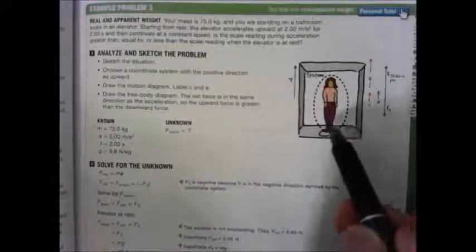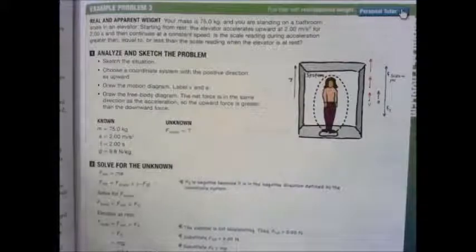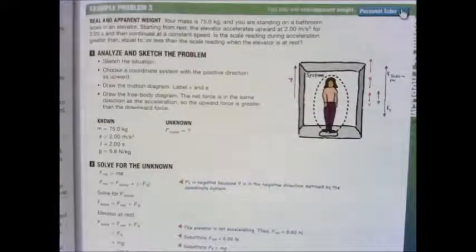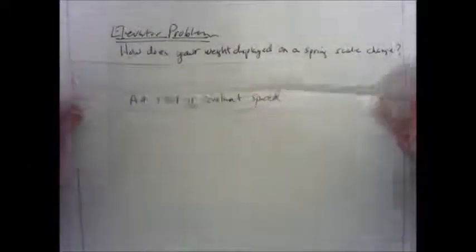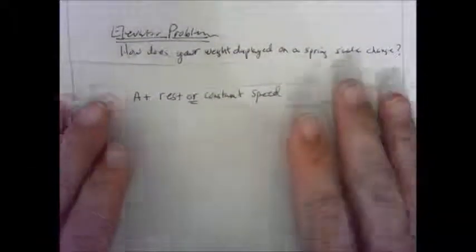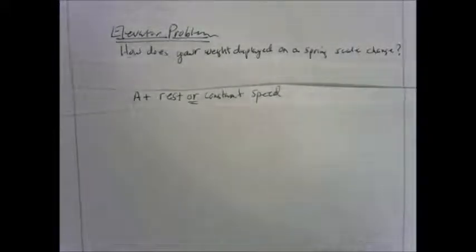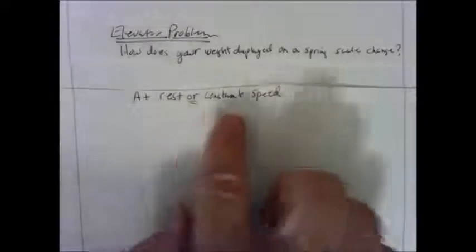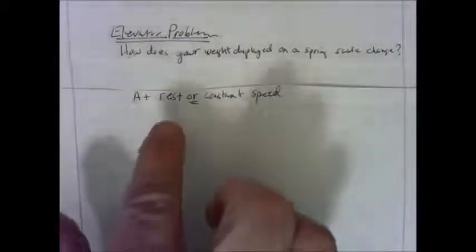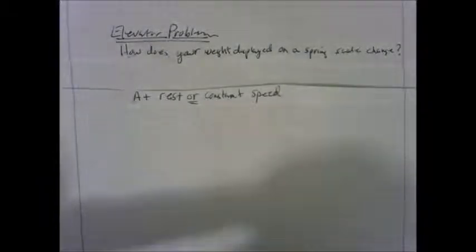We are talking about just the forces on you, the person, standing on the spring scale. There are three distinct situations in the elevator problem. One is when the elevator car is stopped, or when you are at constant speed — both of these are one situation.